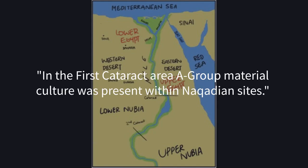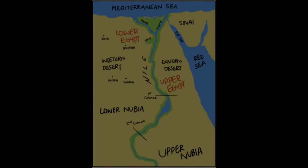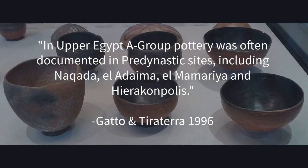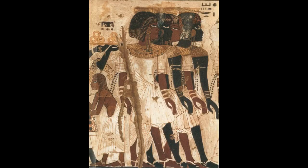In the first cataract area, A-Group material culture was present within the Nubian sites in Upper Egypt. A-Group pottery was often documented in pre-dynastic sites including Naqada, El-Adaima, El-Mamariya, and Hierakonpolis. A-Group is the name given to a cultural complex of ancient Nubia.